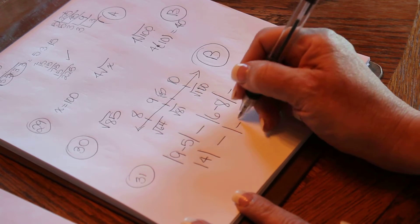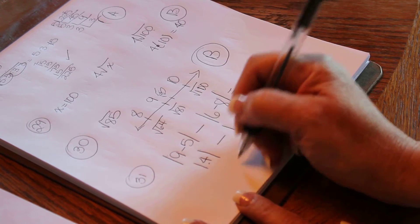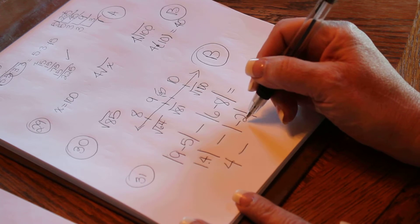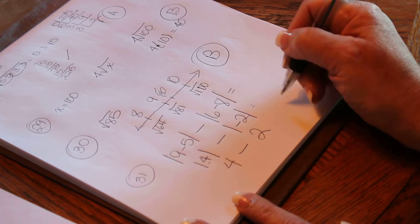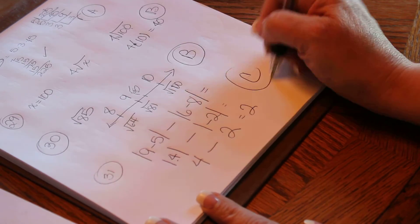6 minus 8 is negative 2. So how far is 4 from 0? Well, it's 4. How far is negative 2 from 0? It's 2. So 4 minus 2 is 2, and that's letter C.